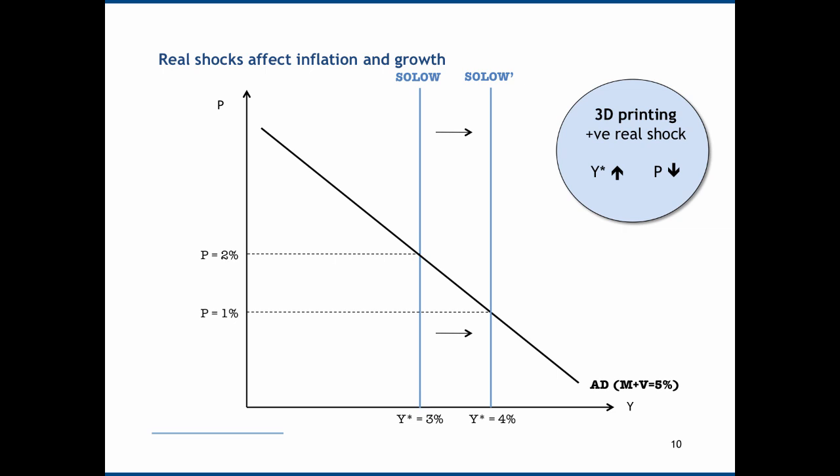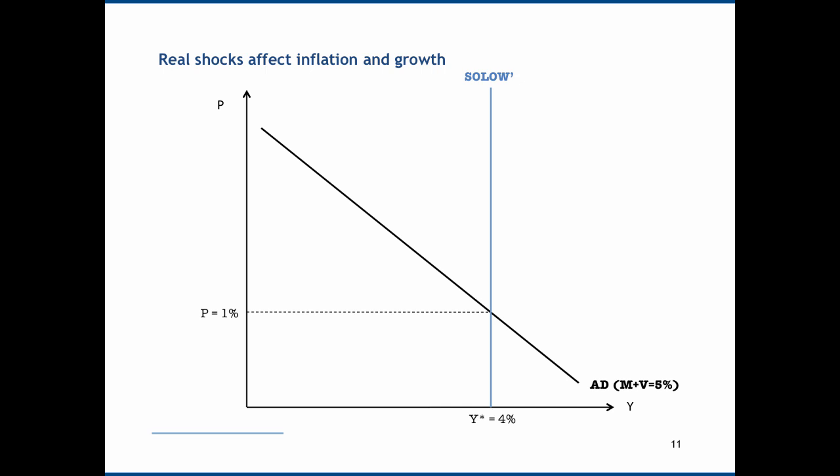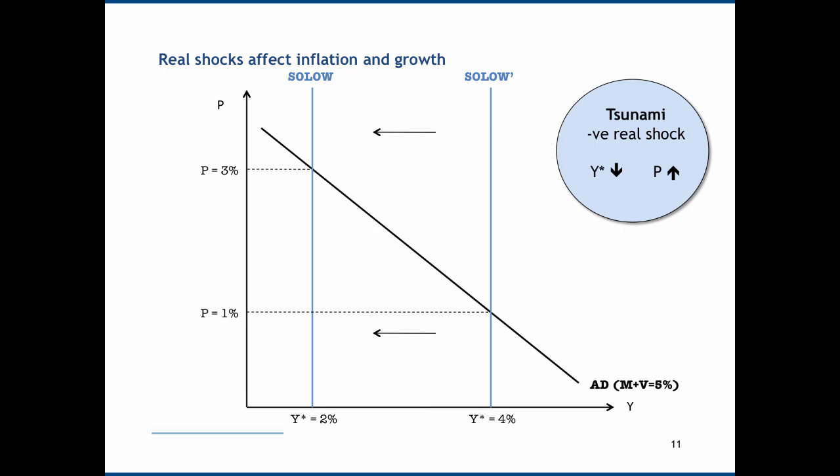We can also think about the impact of a negative real shock. Let's imagine a tsunami — a tsunami is going to destroy capital, reduce productivity, and constitute a shift to the left in the Solo curve. Let's imagine it shifts all the way back to 2%. We now move up the aggregate demand curve, and assuming total spending remains the same, that 5% total spending is split into 2% real GDP growth and therefore 3% inflation. A tsunami — a negative real shock — leads to a reduction in Y star and an increase in inflation.